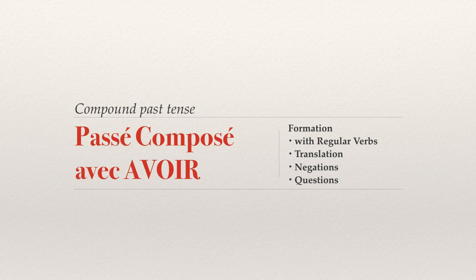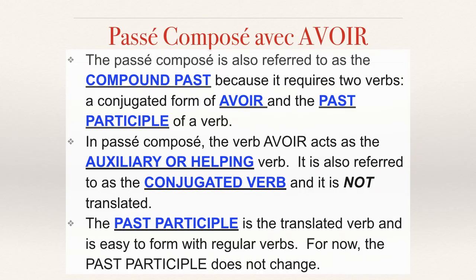Bonjour! Today we're going to learn how to do passé composé with avoir. Passé composé is known as the compound tense — the compound past tense — and it's referred to this way because it requires two verbs.